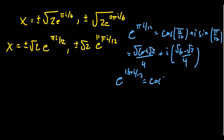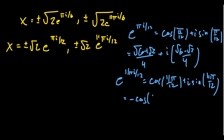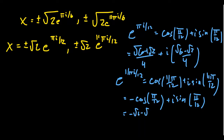So e to the 11 pi i over 12 gives cosine of 11 pi over 12 plus i sine of 11 pi over 12. Notice that pi minus pi over 12 is 11 pi over 12 — that's how we get the reference angle. In the second quadrant this becomes negative cosine of pi over 12 plus i sine of pi over 12, giving us negative root 6 minus root 2 over 4, plus i times root 6 minus root 2 over 4.